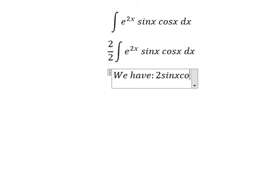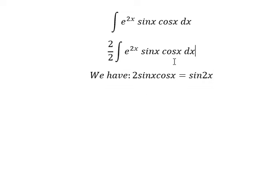We have 2sin(x)cos(x) equals sin(2x). So we have 2sin(x)cos(x), now we can change this into sin(2x).